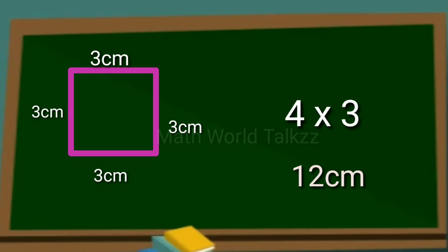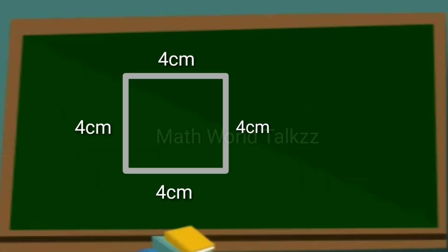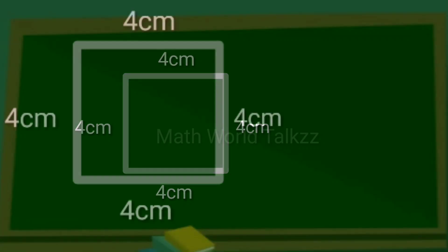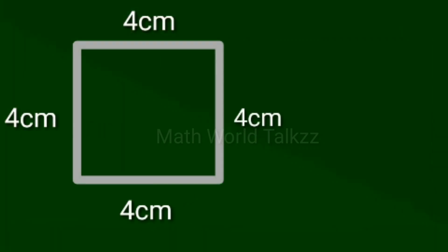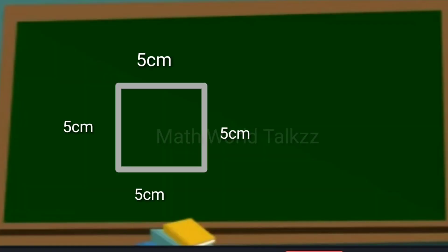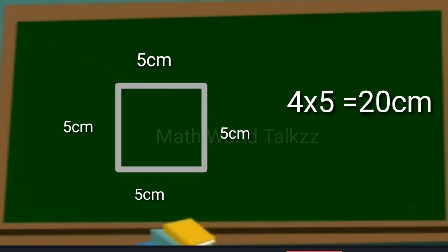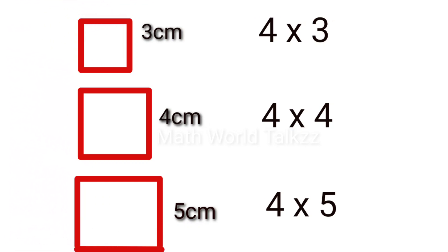4 into 3 is 12. See the next square having size 4 centimeters. What will be the perimeter? 4 into 4 is equal to 16 centimeters. What about the next figure? Here the square has 5 centimeters, so the perimeter is 4 into 5, which is equal to 20 centimeters. So we have found out the perimeters of all these squares.